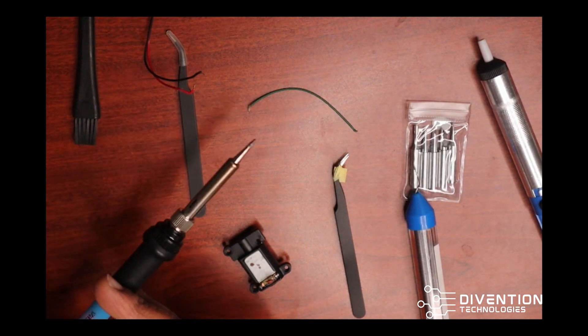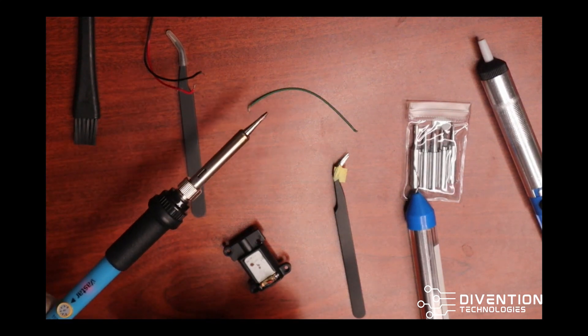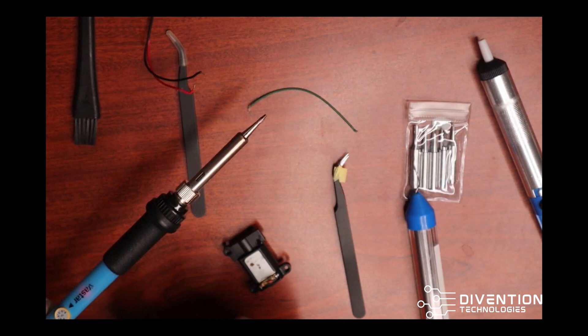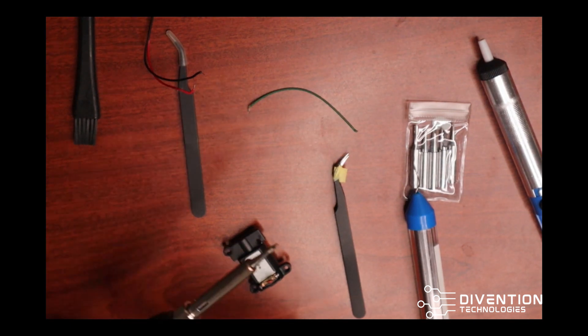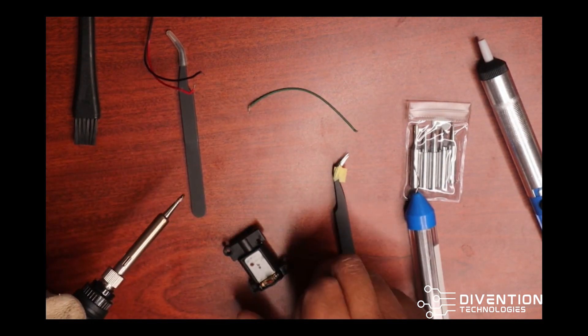And so the first thing that I want to do is I want to make sure that I'm going to solder this on here appropriately. So my soldering iron is on. You can see the little red light there as well as the temperature gauge.